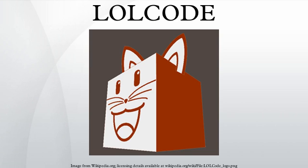Loops are created with 'IM IN YR label' and ended with 'IM OUTTA YR label'. Loops lack counters or conditions, and thus do not cease inherently. They must be manually broken with the 'ENUF' (enough) in-loop command. Loops can also be ended with a conditional 'IZ' command, as shown in Example 3, which displays the numbers 1 through 10 and terminates.